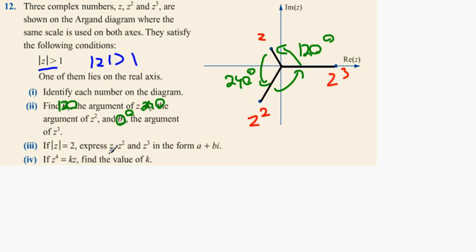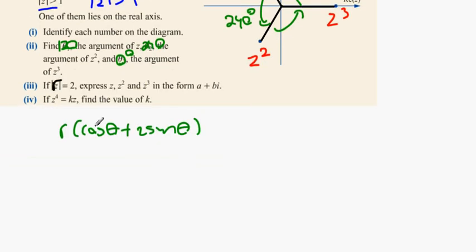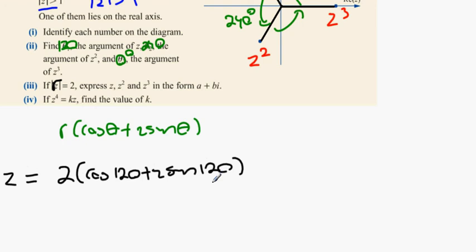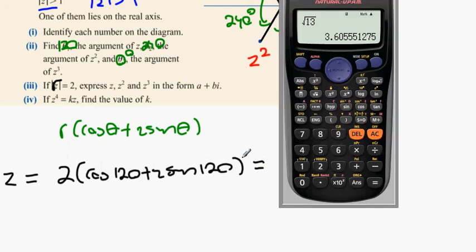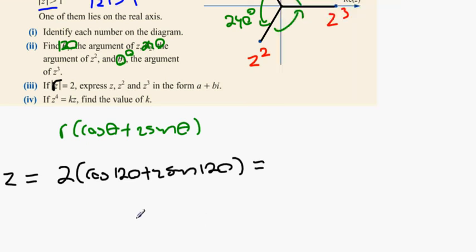The modulus of Z equals 2. Express Z, Z squared, and Z cubed in the form a plus bi. Using polar form R times (cos θ + i·sin θ), we know R equals 2. So Z equals 2(cos 120 + i·sin 120). Calculating: 2·cos 120 is minus 1, giving us minus 1 plus root 3 times i.